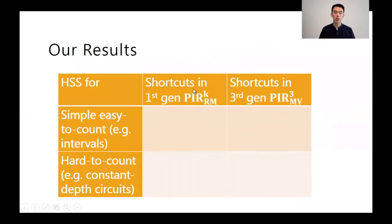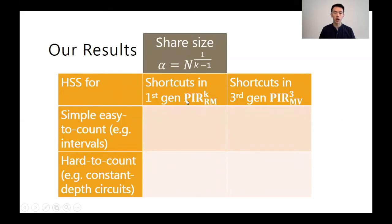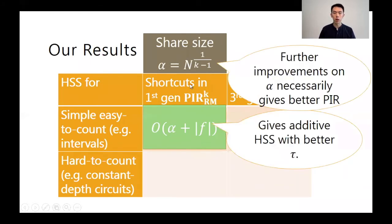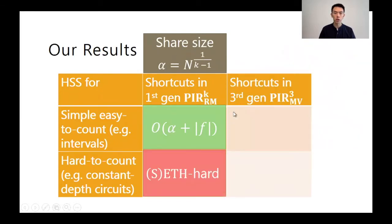Now let's look at our results. For the first-generation Reed-Muller PIR where the share size is n to the 1 over k, we construct shortcuts for simple functions where the number of ones in the truth table are easy to count. This implies HSS with better efficiency for those functions. When we move to slightly more complicated functions where the number of ones are hard to count, we encounter fine-grained complexity hardness. In particular, any shortcut would imply a better counting algorithm for CNF formulas, which would falsify the exponential time hypothesis (ETH) and its strong variant SETH — standard assumptions in fine-grained complexity.